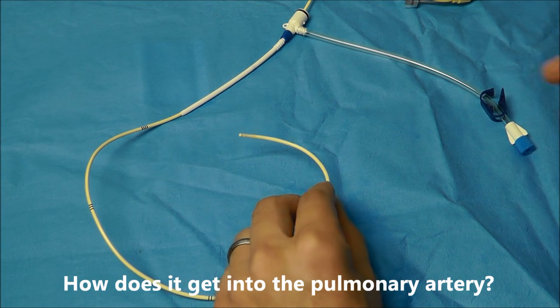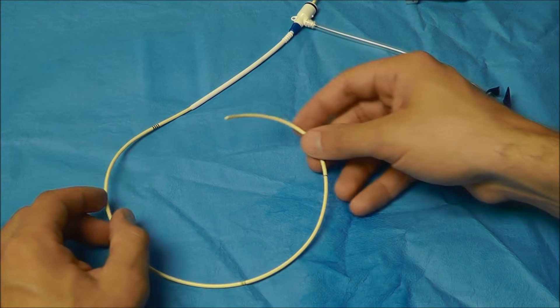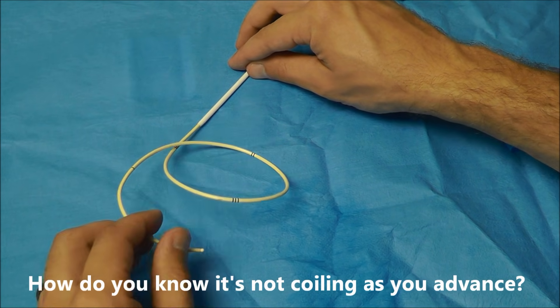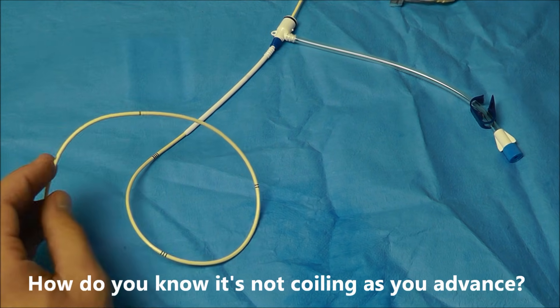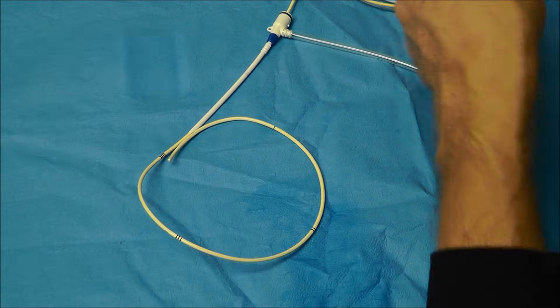So the first question you're probably going to have is how does this actually get into the pulmonary artery, and what prevents this from coiling up like this in someone's atria or ventricle? And the answer is this balloon on the distal tip that I'm going to inflate here.